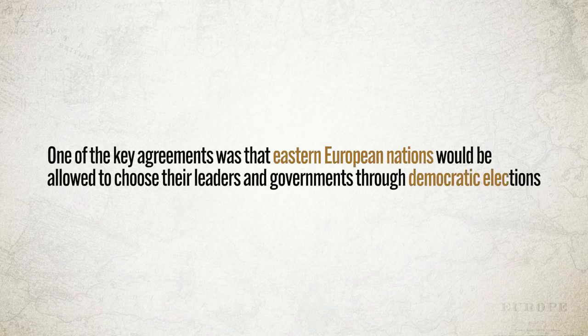One of the key agreements was that Eastern European nations would be allowed to choose their leaders and governments through democratic elections. That was great for the United States and Britain, but over in the Soviet Union, Stalin was less than pleased. Regardless, they made the agreement and went ahead and finished fighting the war.